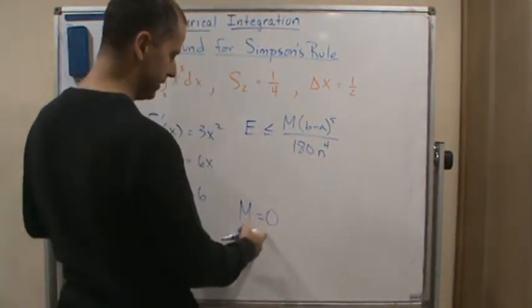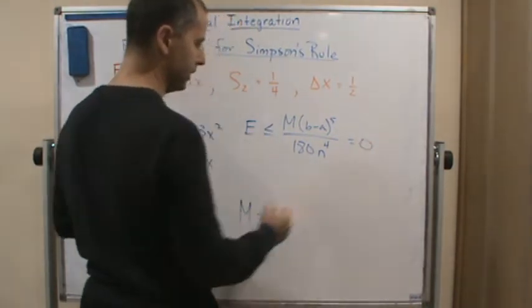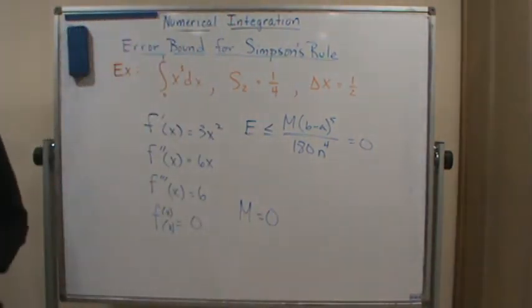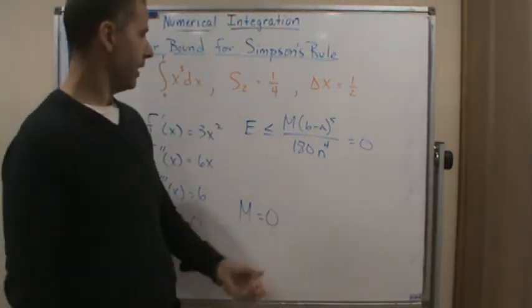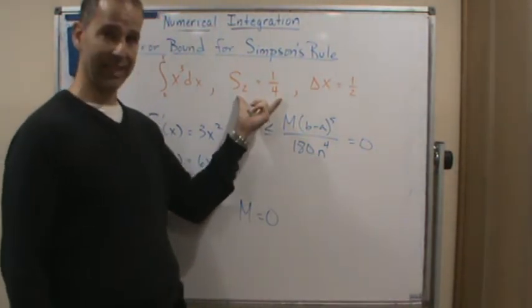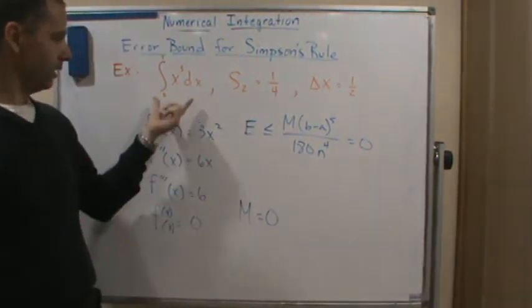But if M is 0, then this thing is equal to 0. What does that tell us? That tells us that this approximation is the exact answer.